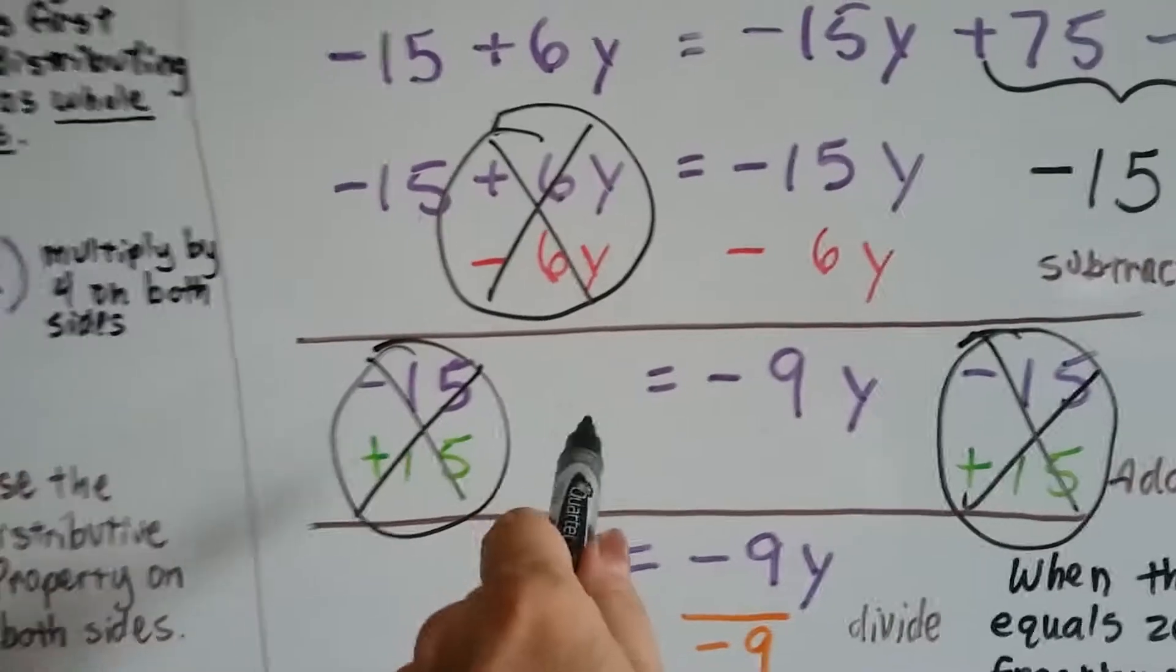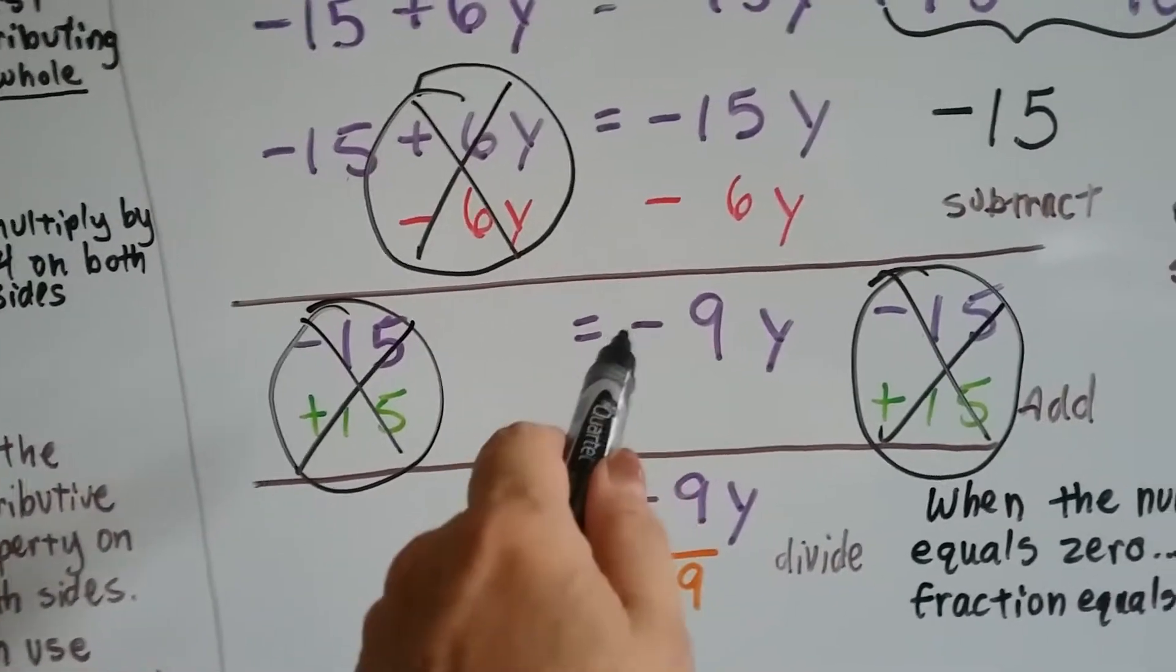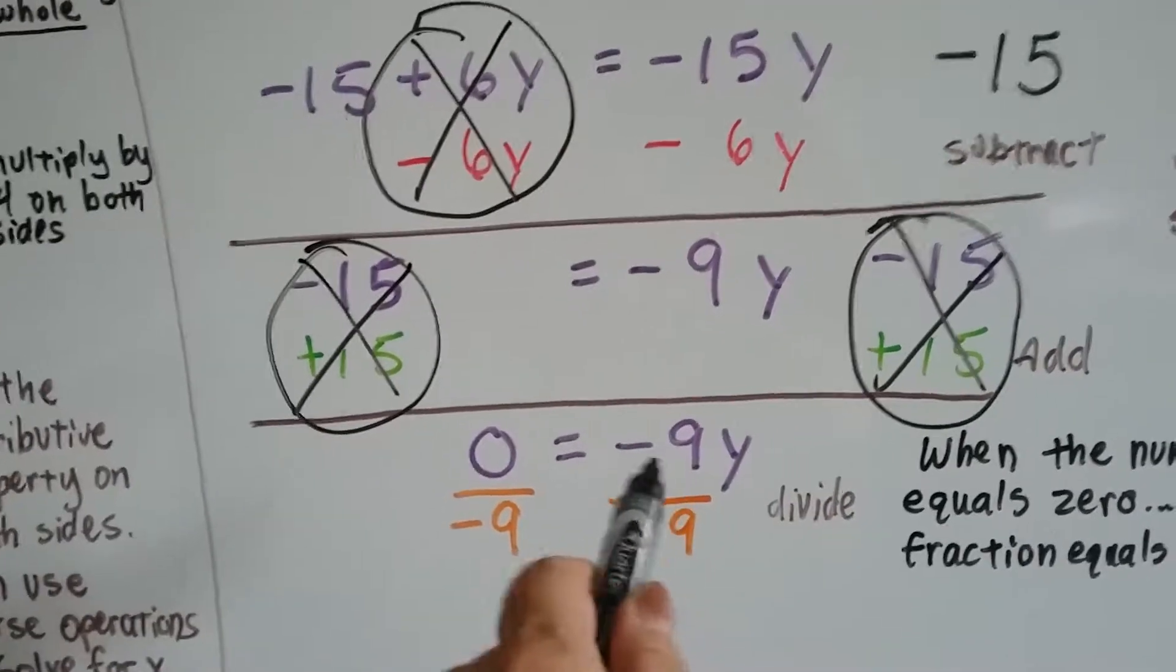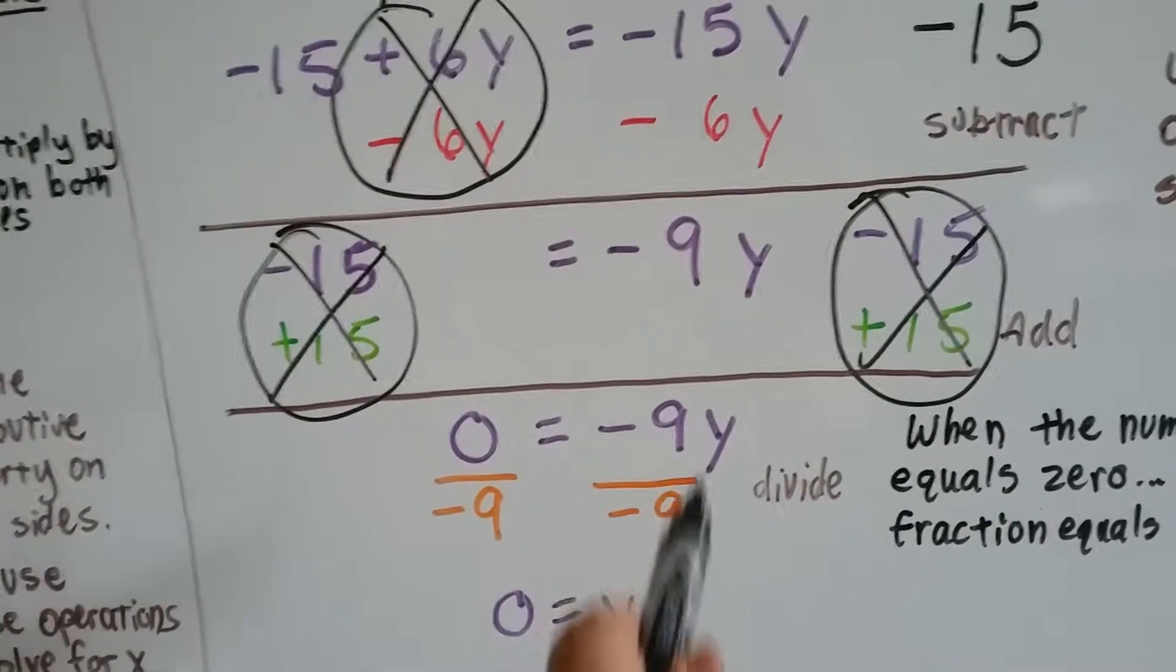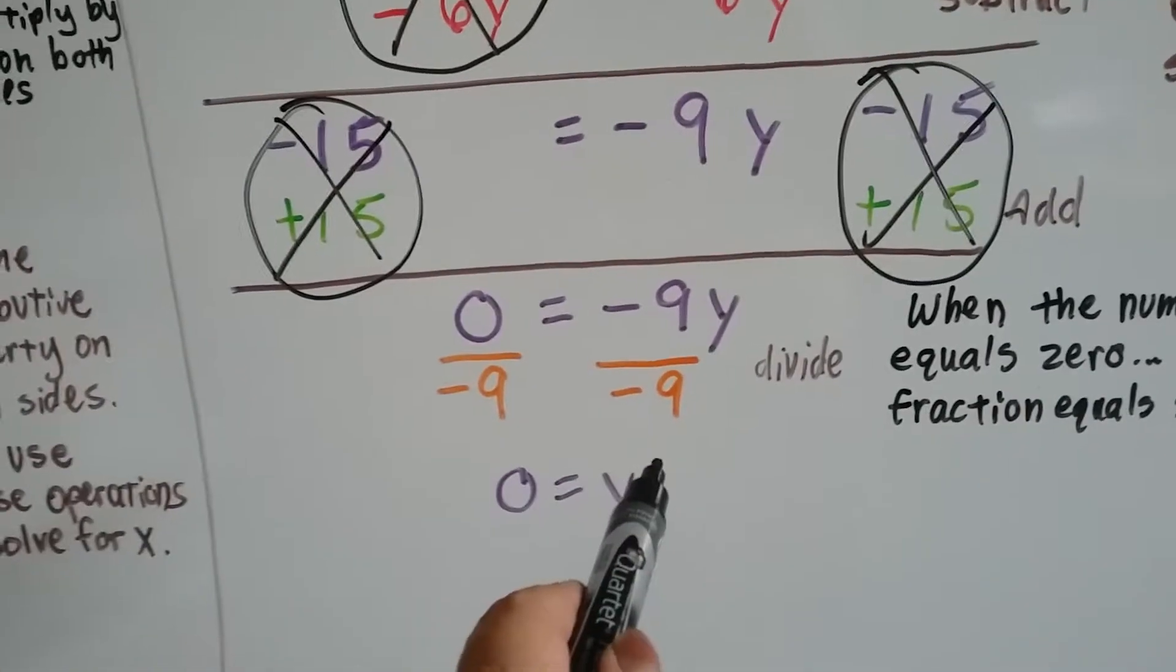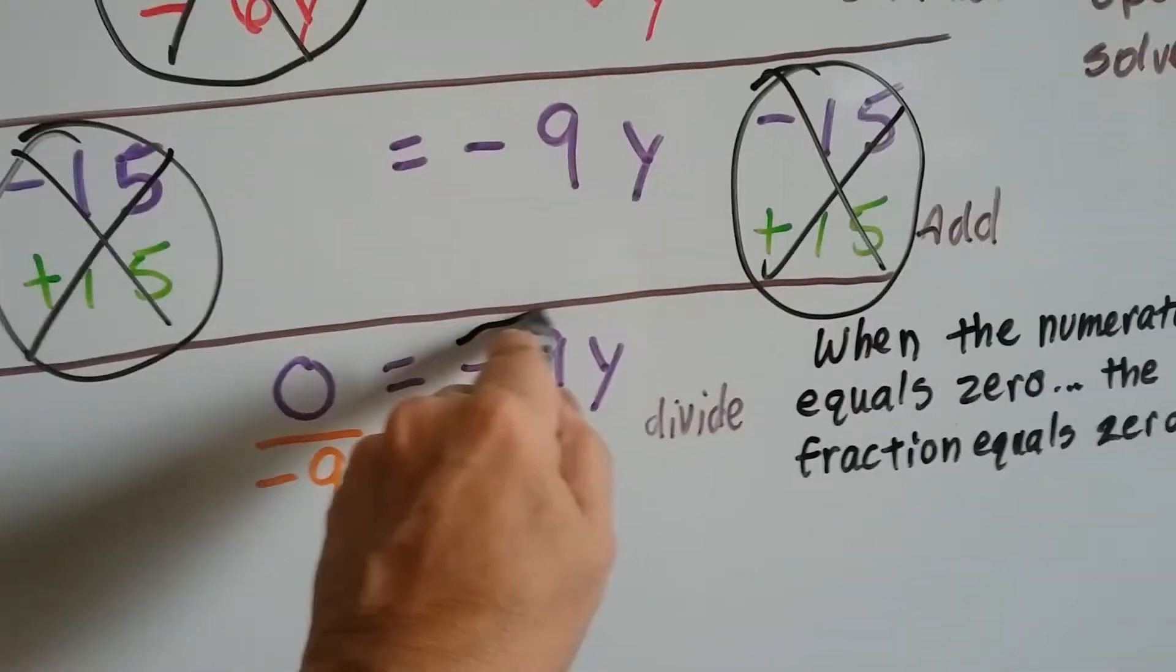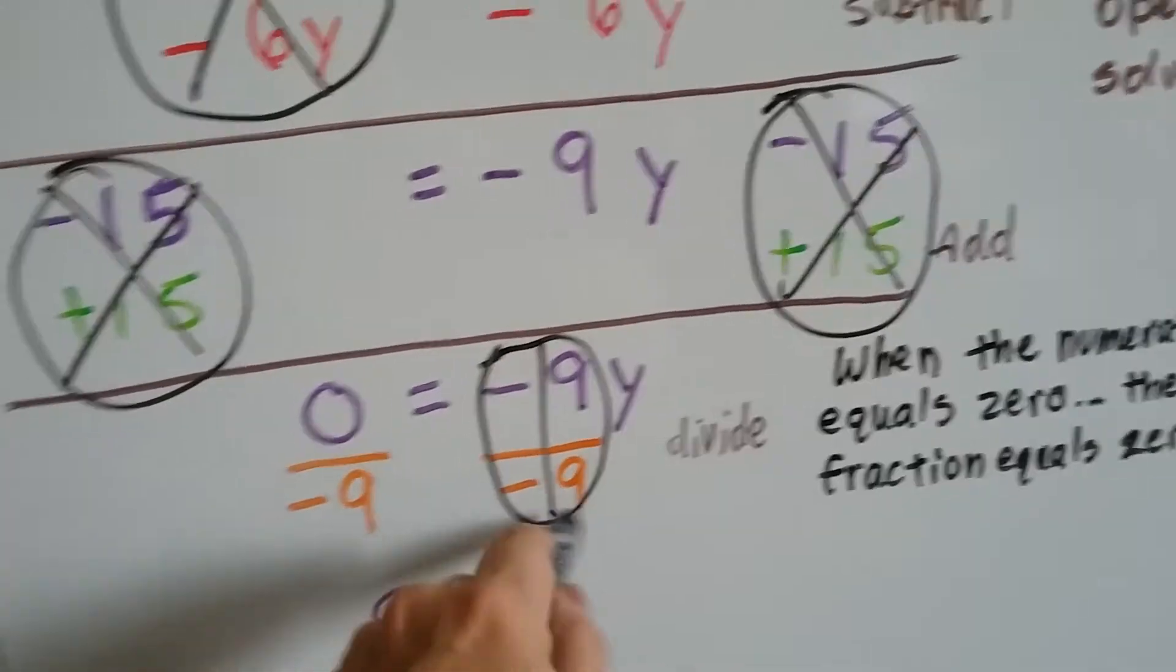But now we have nothing on the left side of the equation. We've got a zero. We drop down the negative 9y, and because this is multiplication, we divide by negative 9. Negative 9 divided by negative 9, that's a 1. That's just a y by itself. So we've eliminated this and turned it into our friend, the invisible 1.